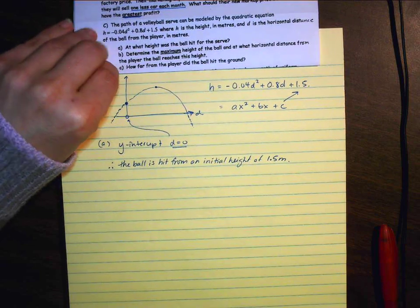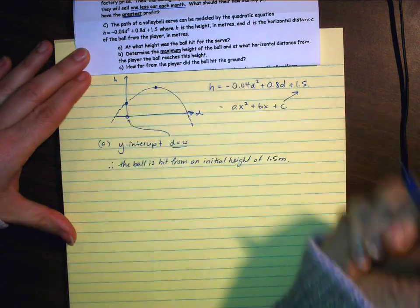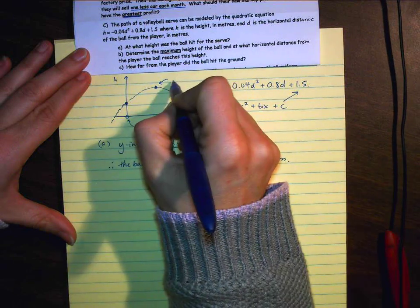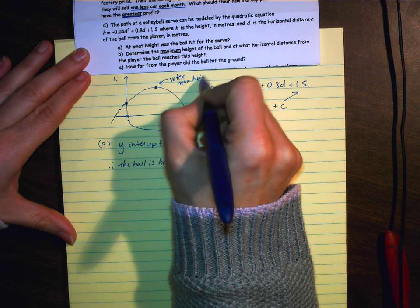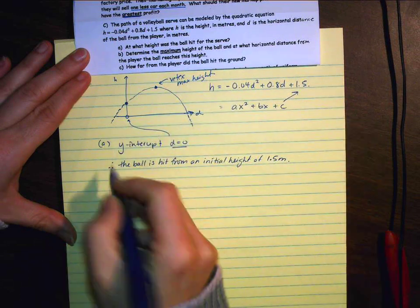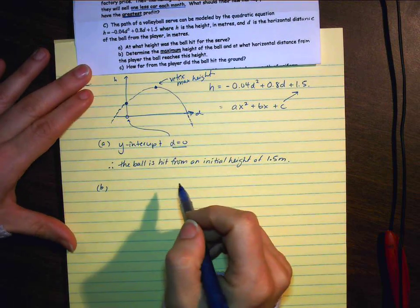So now I'm asked to determine the maximum height of the ball. So that means we're looking at the vertex. The vertex is the maximum height. So that's what we're going to be finding for part B. And to do that, we need to find the vertex.